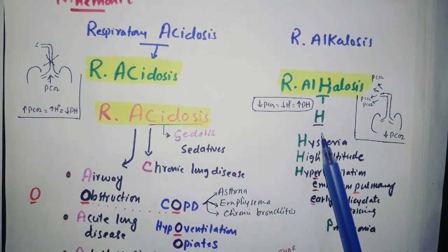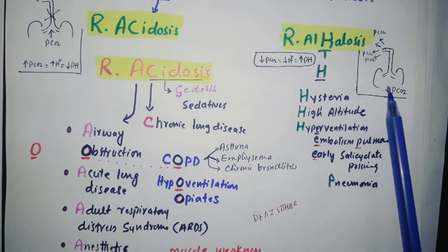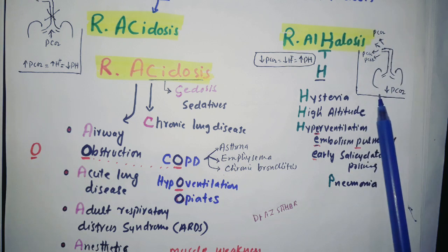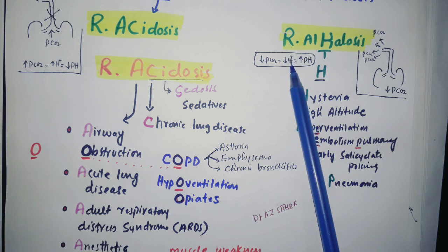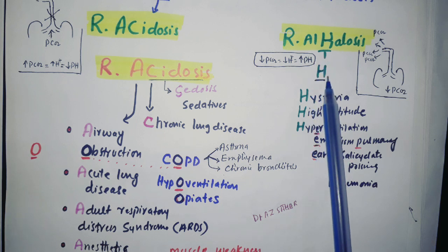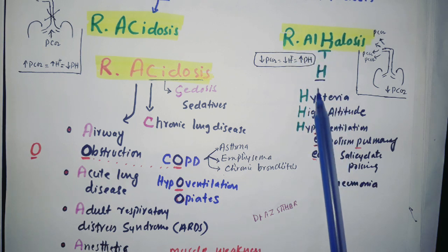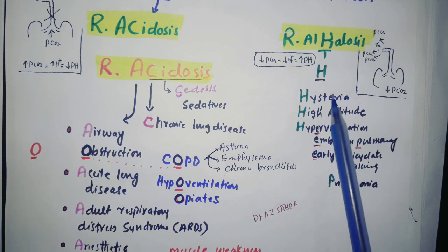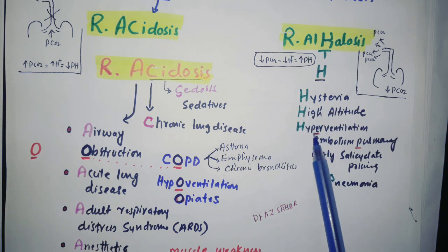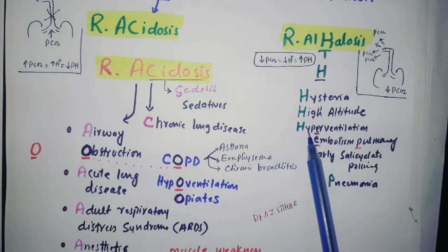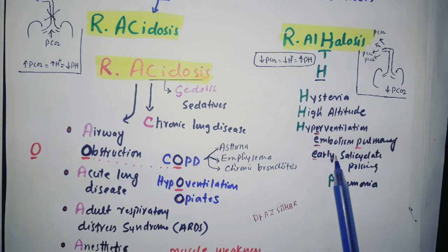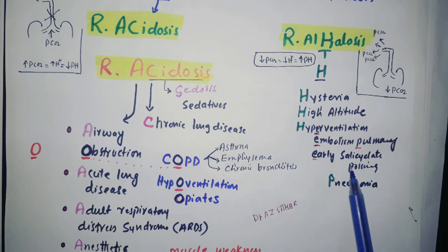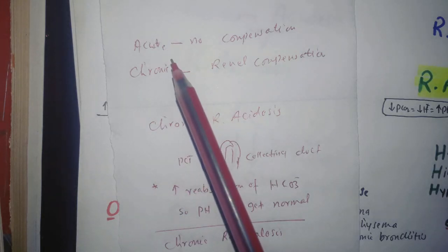In respiratory alkalosis, the respiratory rate is very high and too much CO2 is expelled, so CO2 decreases inside the body, protons decrease, and pH rises. Using the mnemonic for alkalosis — H stands for hysteria (psychogenic) and high altitude, where hyperventilation occurs. E stands for pulmonary embolism or pulmonary edema. Early salicylate poisoning and pneumonia also cause respiratory alkalosis.